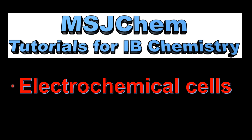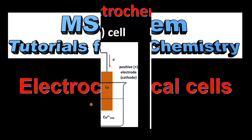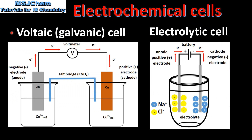This is MSJChem. In this video I'll be looking at a comparison of the two kinds of electrochemical cells. In the previous videos we looked at two kinds of electrochemical cells. On the left we have a voltaic or galvanic cell, on the right we have an electrolytic cell. Next we'll have a look at the similarities and the differences between the two.